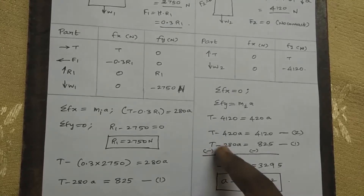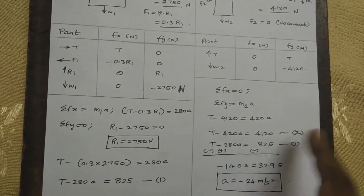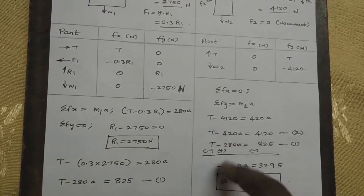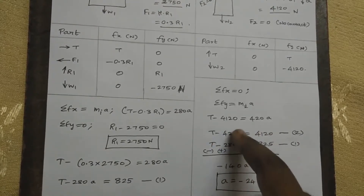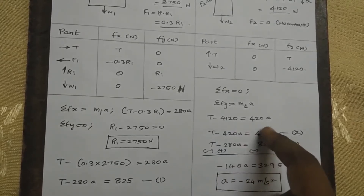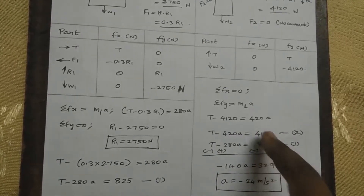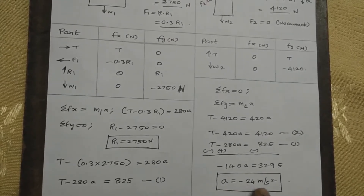Subtracting the two equations — plus minus, minus plus: T minus T cancels. Subtracting gives minus 140A equals 3295. Solving, the total value gives A equal to minus 24 meters per second squared.